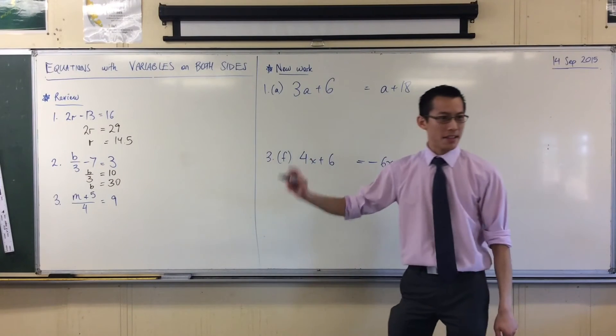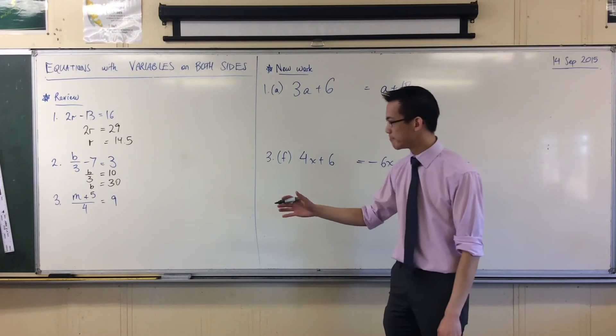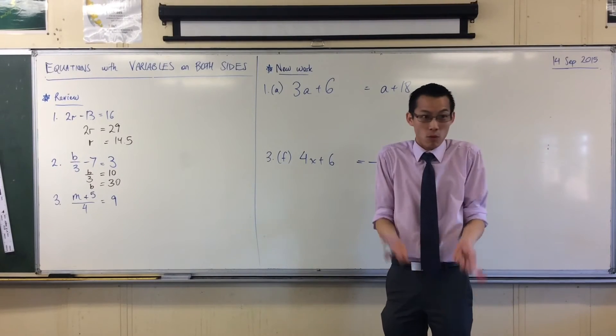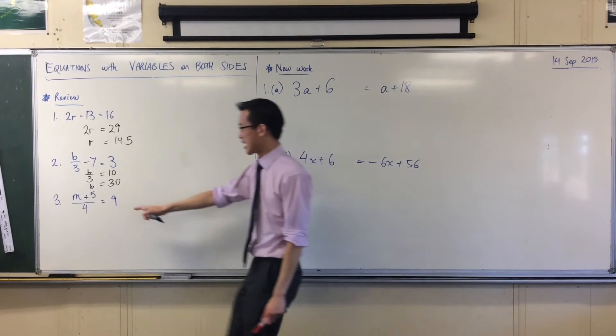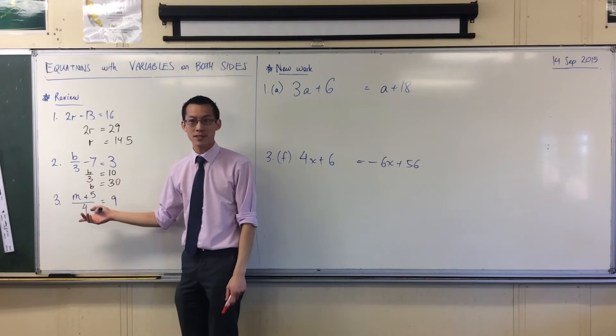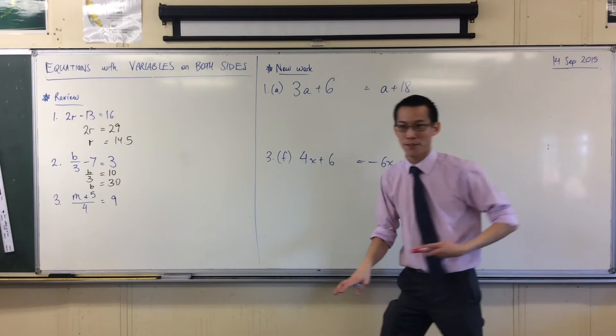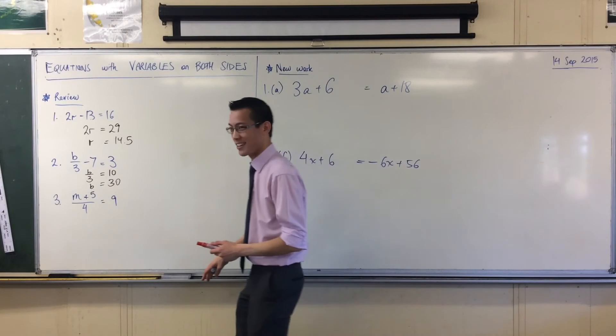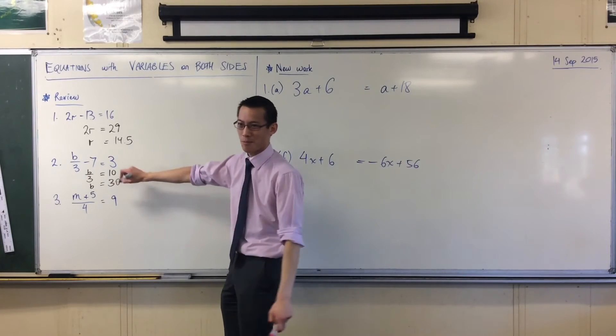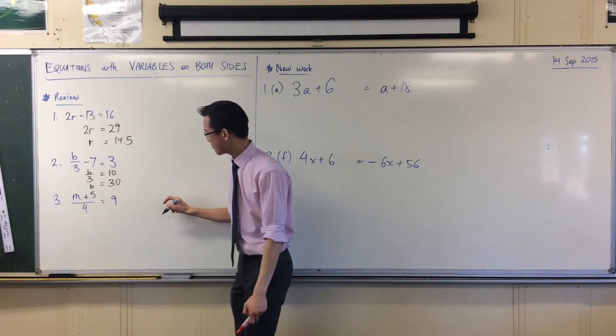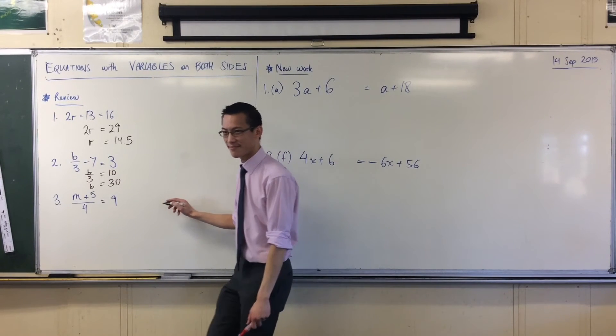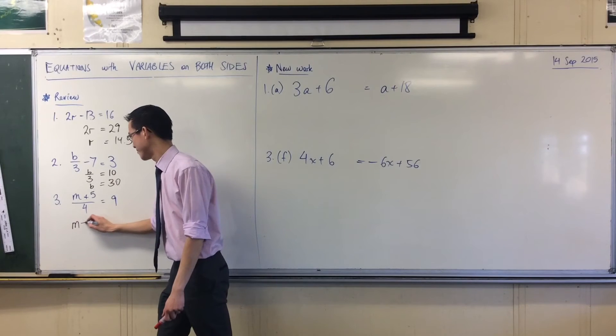One more to go. This time, we don't have as many choices, really. There's only really one direct thing you can do to get that M by itself. What would be our first step? Someone who hasn't said anything yet. You've got this, what would you put as your first line? M plus 5 equals 36.